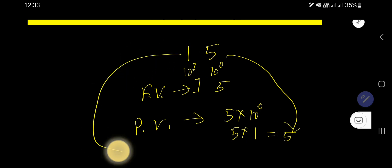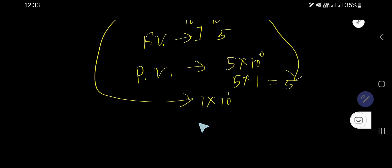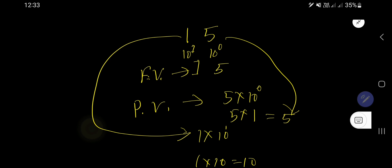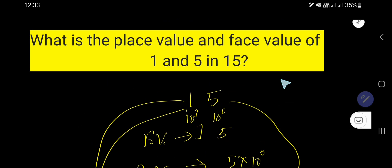And the place value of 1 equal to what? The face value of 1 is 1 times the position of 1. That is, in 10's place. 10's place. That is, 10 to the power 1 means 10. So the place value of 1 equal to 10. That's about it.